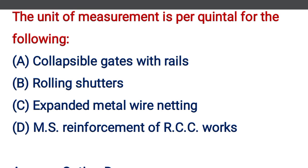The unit of measurement is per quintal for — option A: collapsible gate with rails, option B: rolling shutters, option C: expanded metal wire knitting, option D: MS reinforcement of RCC works.